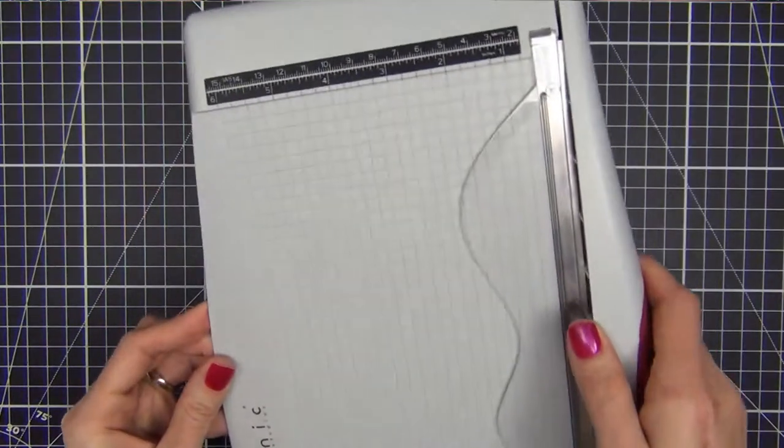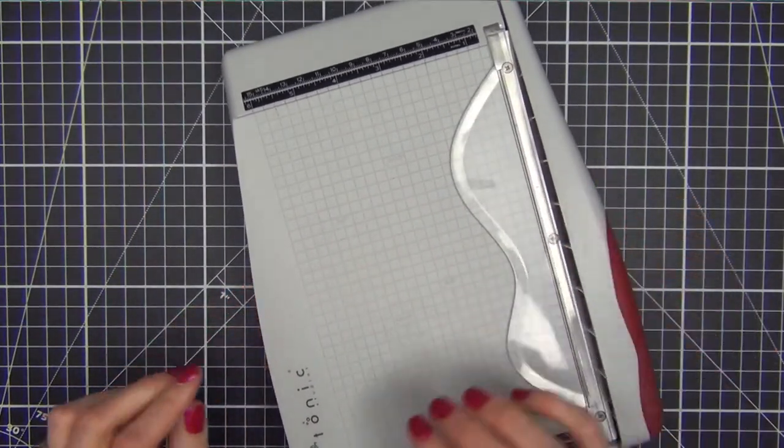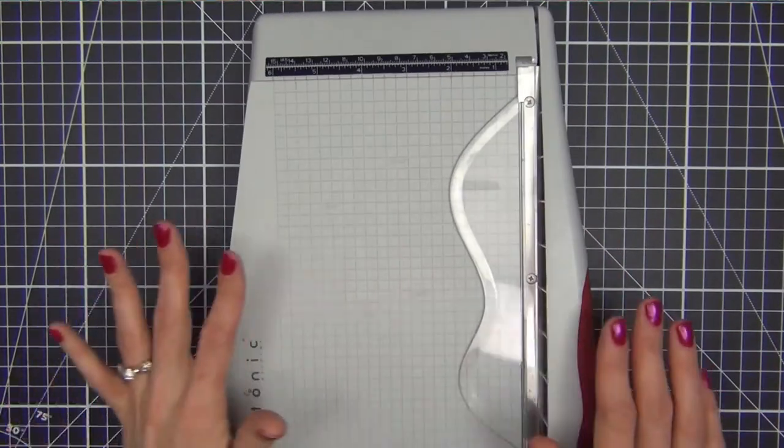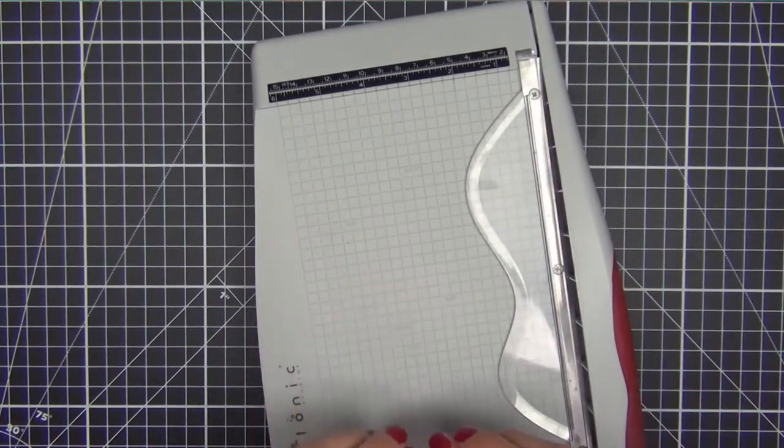The first tip I'm going to show you is how to cut paper with a guillotine style trimmer. This one I'm using here is the Tim Holtz Tonic Studios one, which I really like. And if you don't have this one but you have a guillotine style trimmer, this tip will work for you.